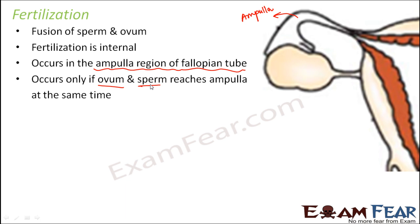During that 24-hour window, the ovum needs to meet the sperm in the ampulla region; otherwise there will be no fertilization at all. One important thing to note is that the sperm is haploid and the ovum is also haploid, so when both fuse together they form something diploid. This is how the egg is released, this is how the sperms come in, and this is where fertilization takes place.